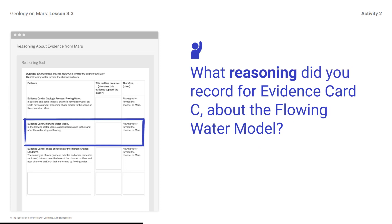Review Evidence Card C, then record how the evidence supports the claim in the middle column of the reasoning tool. Take several minutes to work on Evidence Card C. What reasoning did you record for Evidence Card C about the flowing water model? You might respond: the flowing water model showed that after water stopped flowing, it left behind a channel. This is evidence that flowing water in the past could have carved the channel on Mars.